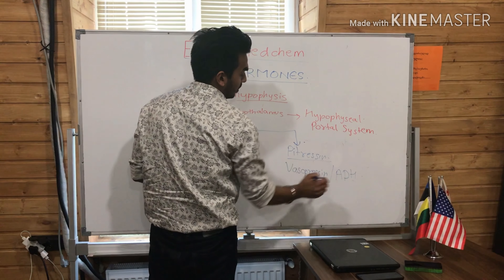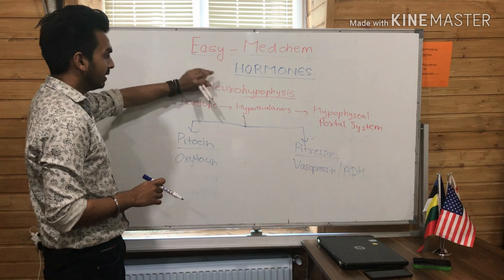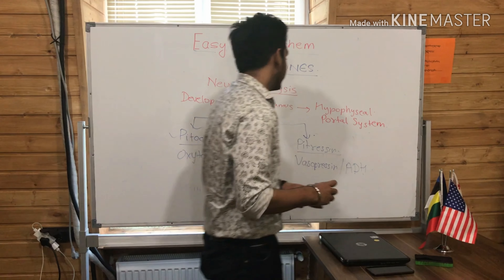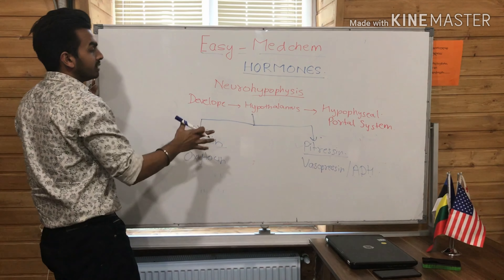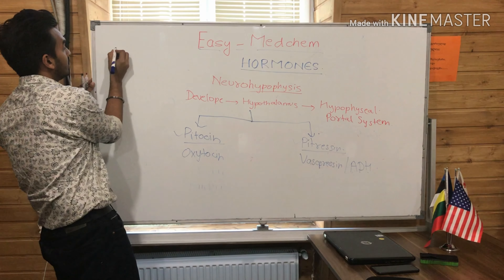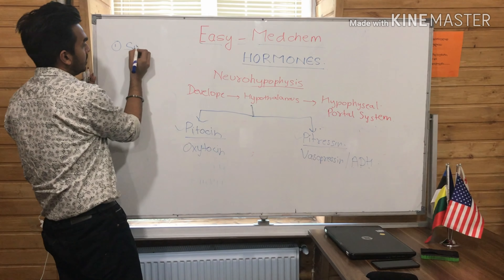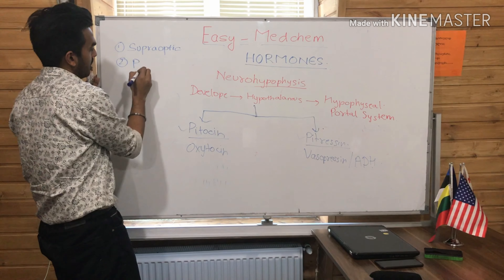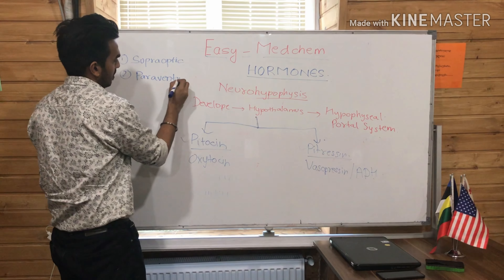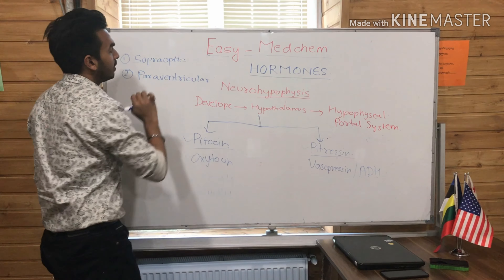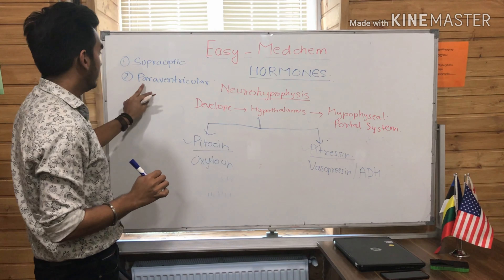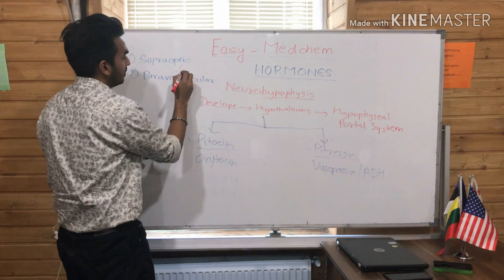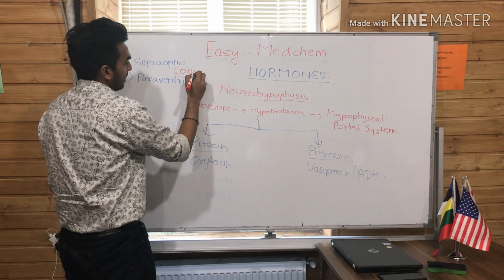The neurohypophysis has two types of hormones. The first one is Oxytocin (also called Pitocin), and the second one is Vasopressin, also known as ADH — Anti-Diuretic Hormone. At the hypothalamus level, two types of nuclei are present which are responsible for secreting these two hormones.